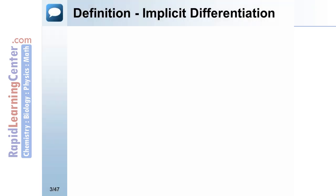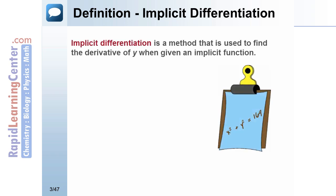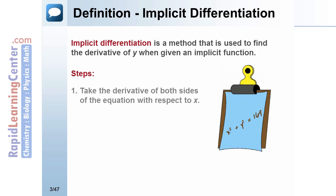The definition of implicit differentiation: implicit differentiation is a method used to find the derivative of y when given an implicit function. The steps involved are: number one, take the derivative of both sides of the equation with respect to x; number two, solve the resulting equation for y prime.